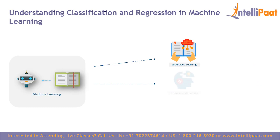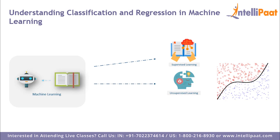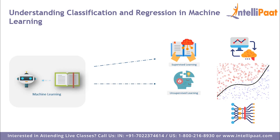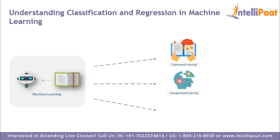Unsupervised learning uses information that is neither labeled nor tagged, allowing the algorithm to move over that information without guidance. The task of the machine is to group data by similarities, patterns, or differences without preparing the data in advance. Unlike supervised learning, no teacher is offered, so the machine is limited to finding hidden structure in the data.